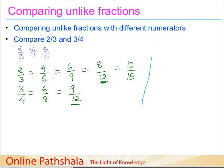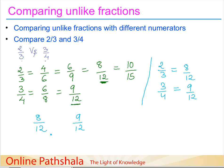We know from equivalent fractions that 2/3 equals 8/12 and 3/4 equals 9/12. Now we can compare 8/12 versus 9/12. We have successfully converted them into like fractions, and it is straightforward: 9 parts out of 12 are greater than 8 parts out of 12.